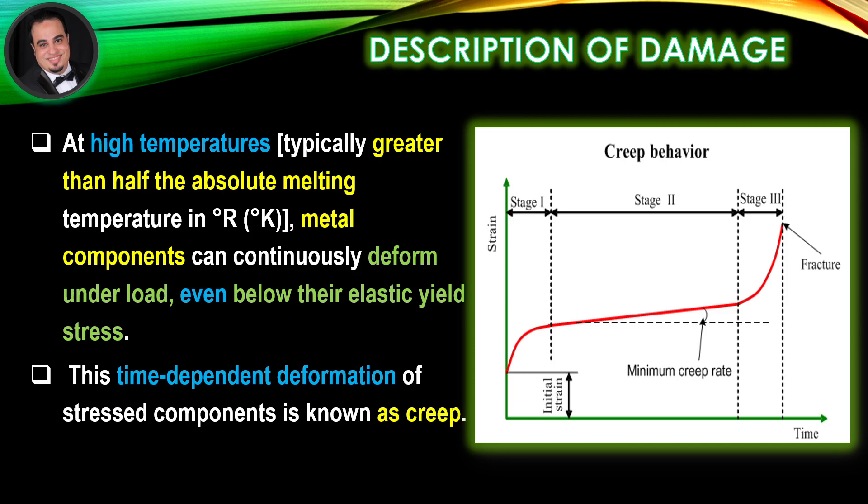In Stage 3, or tertiary creep, the creep rate begins to accelerate as the cross-sectional area of the specimen decreases due to necking or internal voiding, decreasing the effective area of the specimen. If Stage 3 is allowed to proceed, fracture will occur.